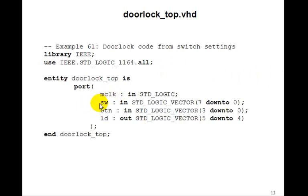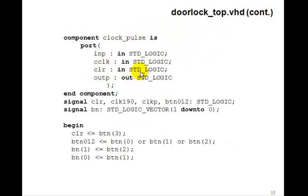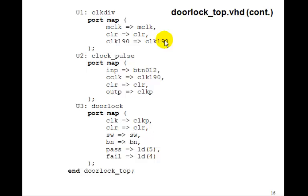You can make a top-level design with MCLK coming in, switches, buttons, and LEDs. We use LEDs five down to four for the two LEDs. In the architecture, we list component declarations for clock_div, door_lock, and clock_pulse. We have signals: clear, clock_190, clock_pulse, button zero/one/two, and BN one down to zero. Clear is button three. BN one gets button two, BN zero gets button one. Then we do the port maps: clock_div, clock_pulse, and door_lock are wired up, with pass going to LD5 and fail to LD4.